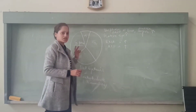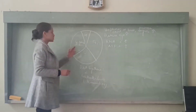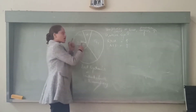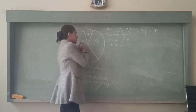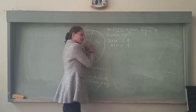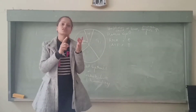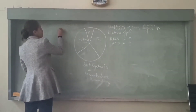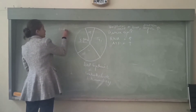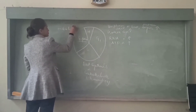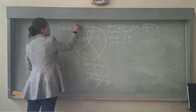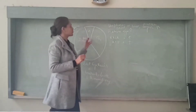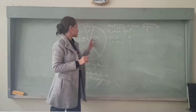In G2 phase, the cell prepares itself for M phase. In M phase, there is again synthesis of protein, but that protein is tubulin protein. These proteins are required for the formation of spindle fibers.